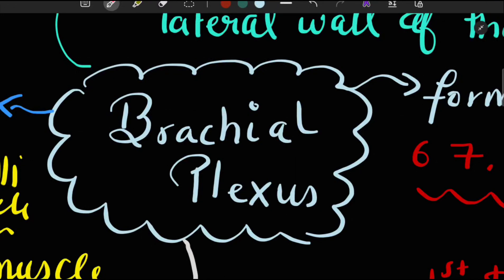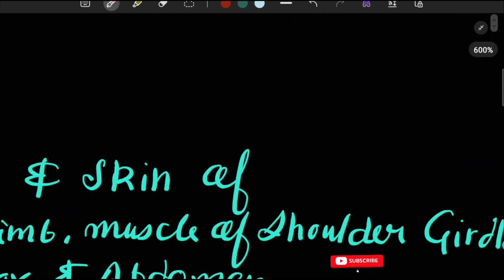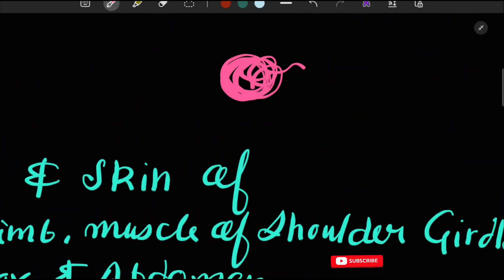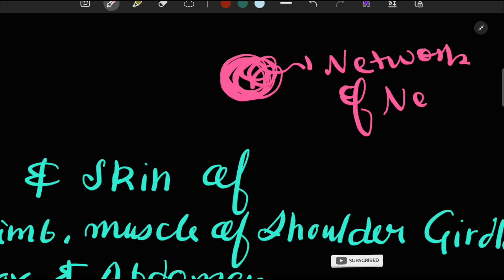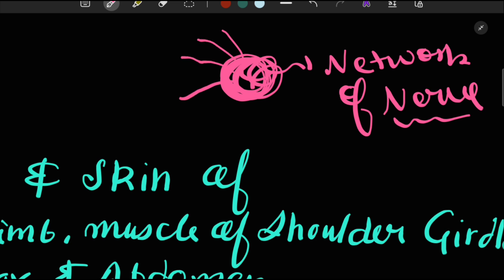Welcome to the lecture. Today we will be discussing the brachial plexus. First, let's understand what a plexus is. A plexus is nothing but a network of nerves, through which several branches of nerves diverge in order to supply a certain region — the muscles and skin of a body.